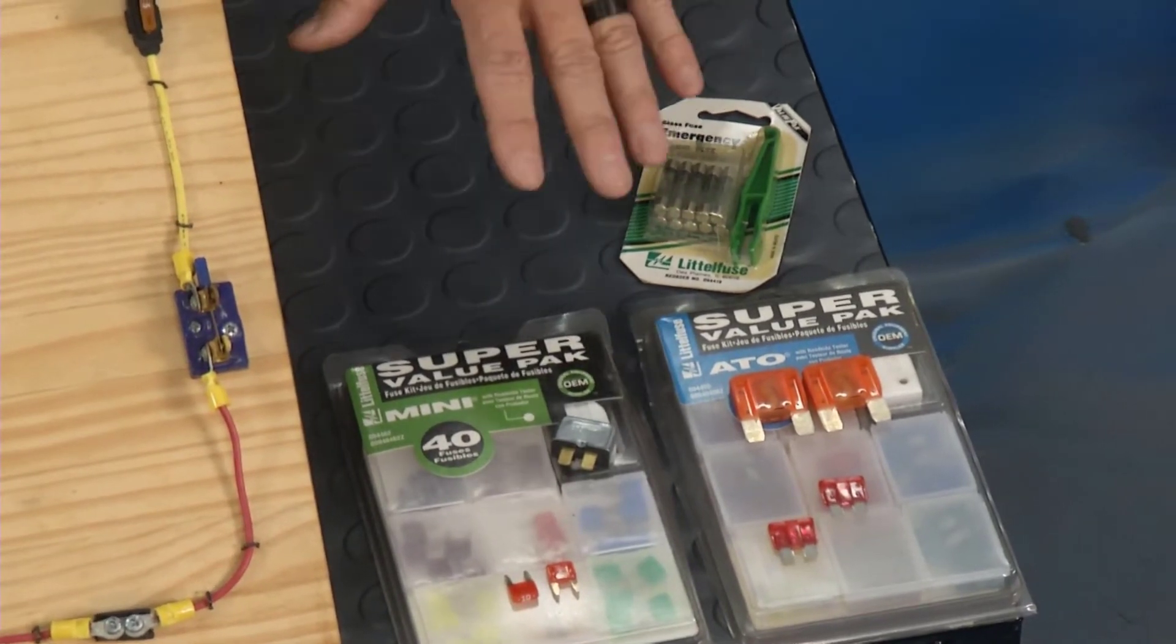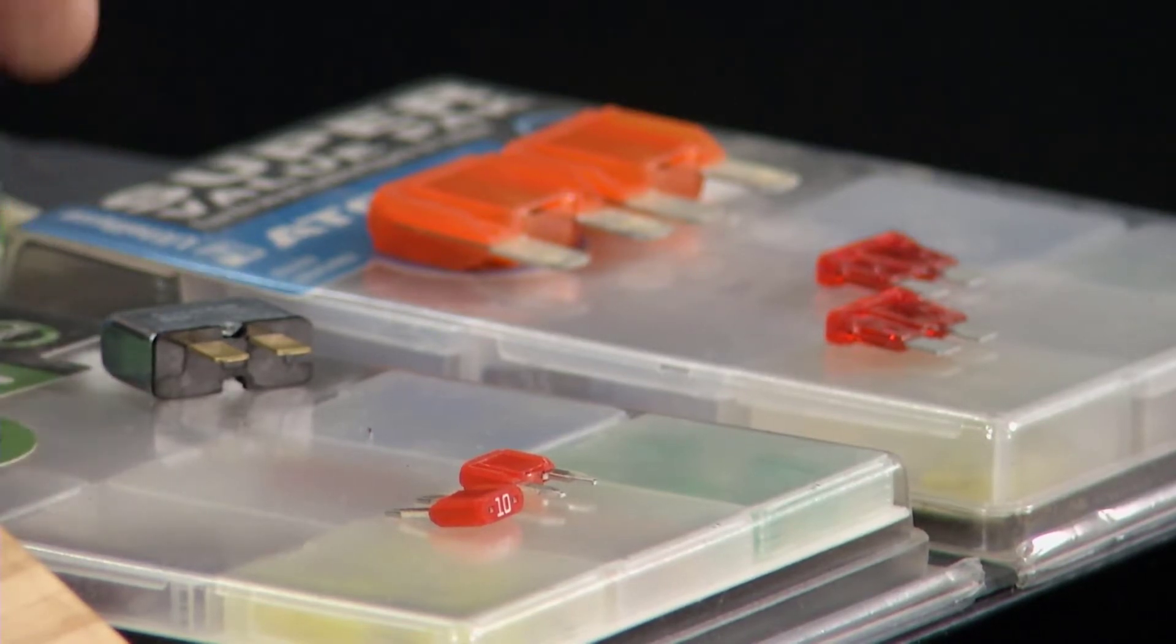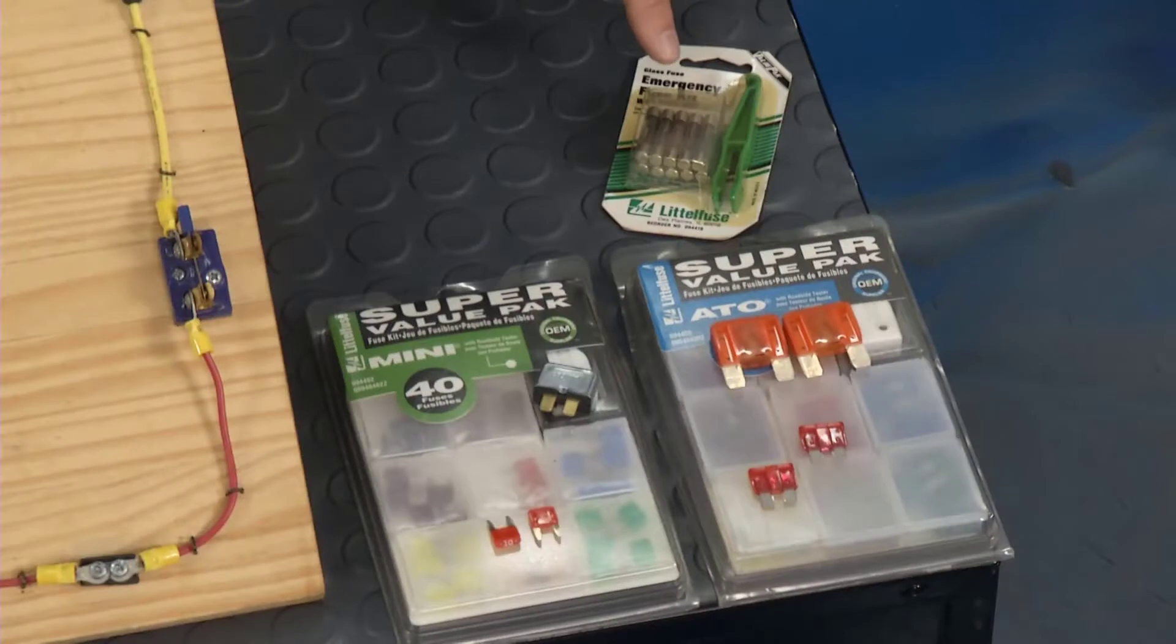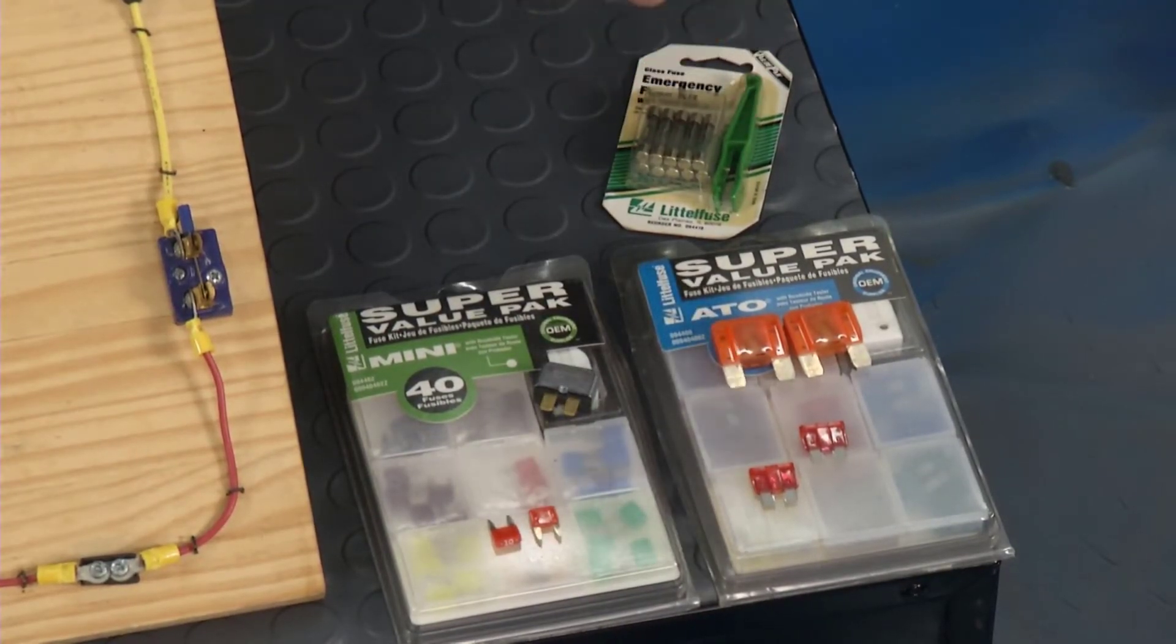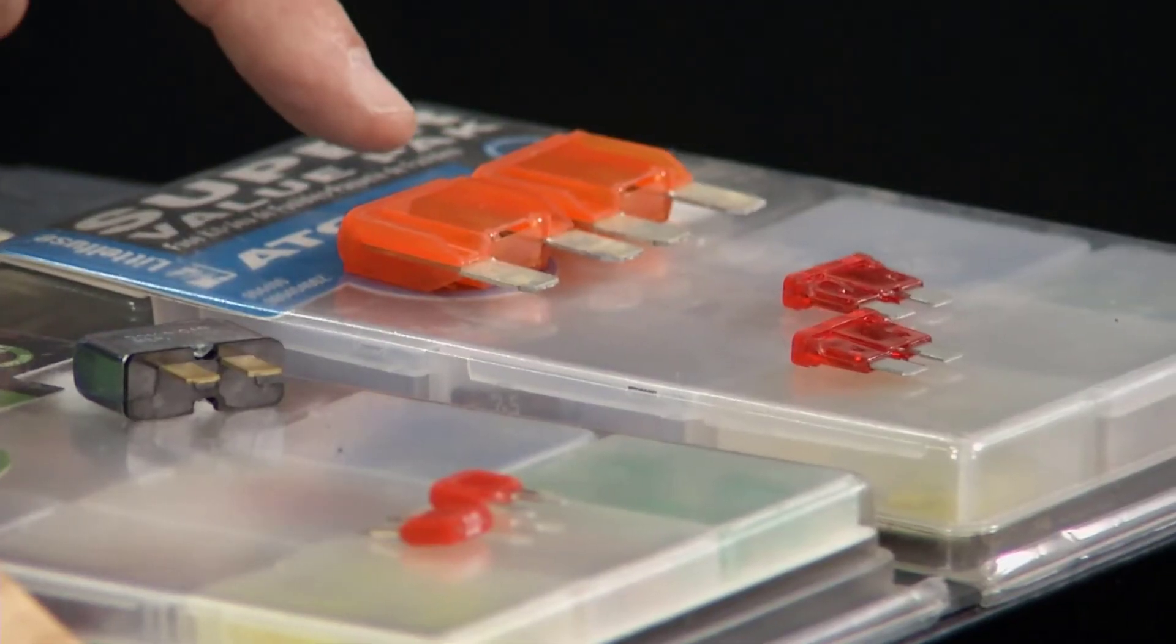Now I went to RockAuto.com and got all these protection devices right here so we can take a look at them. You could have a fuse, you can have a circuit breaker, or you can even have an older car. They have parts for that as well. These are the old glass type fuses right here. Now fuses, they come in shapes and sizes as well. You can see the mini fuses right here, the regular fuses, and then the maxi fuses.